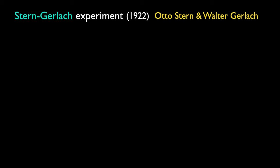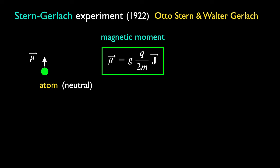The Stern-Gerlach experiment, done in 1922 by Otto Stern and Walter Gerlach, was designed to verify directly the orbitals of an electron in the atom. An atom, which is overall neutral in charge, can nevertheless have a magnetic moment μ due to the motion of its electrons. The spin of the electron also contributes to the magnetic moment, as shown in the last lecture. Together, the total effects of the electron's orbital motion and intrinsic spin give rise to the magnetic moment, expressed in this formula, where j is the total angular momentum and m its mass, with the g-factor determined by quantum electrodynamics.